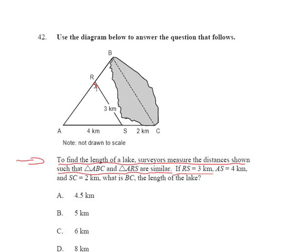that's this side right here, AS is equal to 4 kilometers, that's this right here, and SC is 2 kilometers, that's this right here, what is BC, the length of the lake?